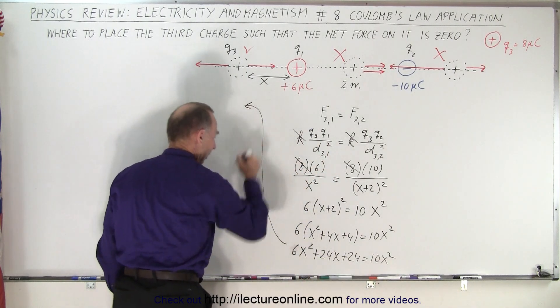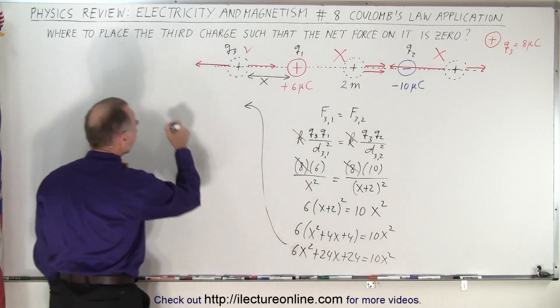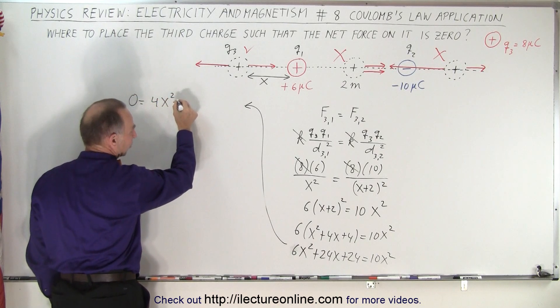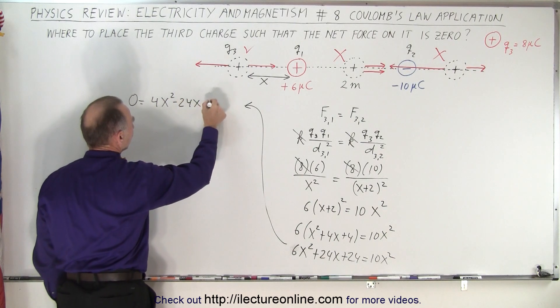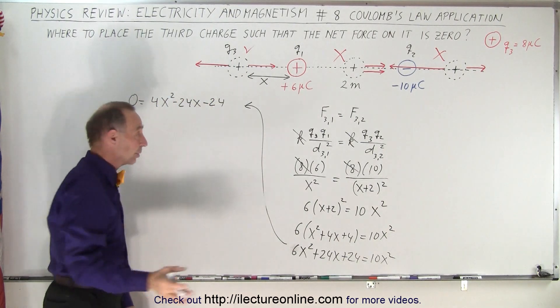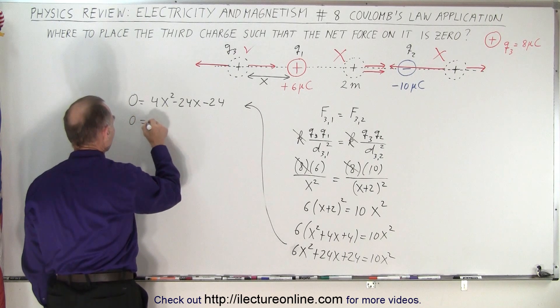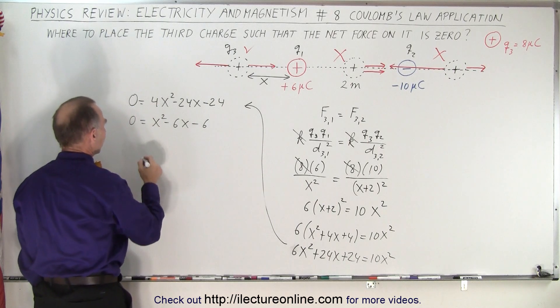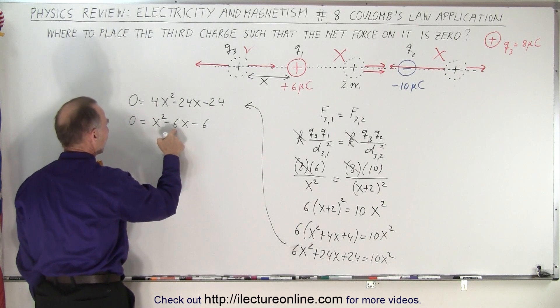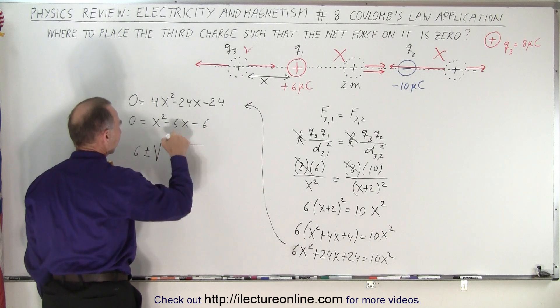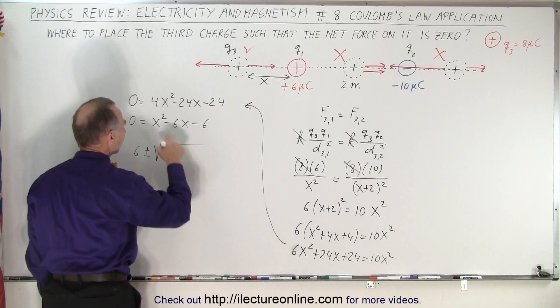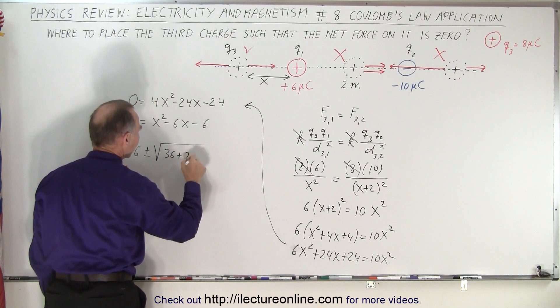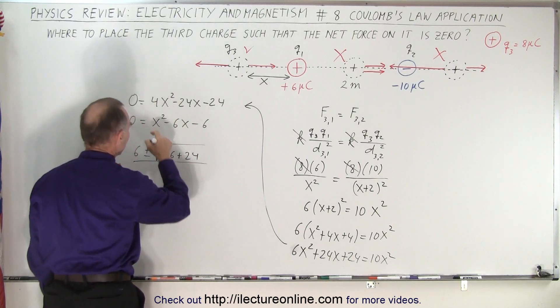And then coming up here to finish up. Moving everything over to one side. So we have zero is equal to 10 minus six which is four X squared minus 24 X minus 24. And right away we can see there's a common factor of four. So that means that zero equals X squared minus six X minus six. And then using the quadratic formula we can say that negative B which is six plus or minus the square root of six squared which is 36 minus four AC but we have a minus there so it becomes plus four times six which is 24 all divided by 2A which is two.